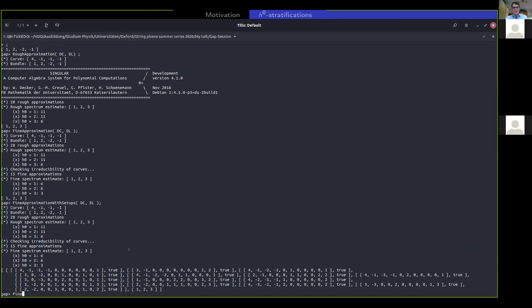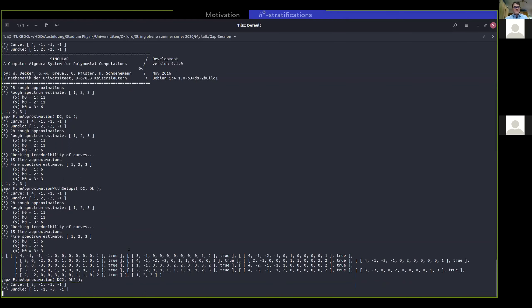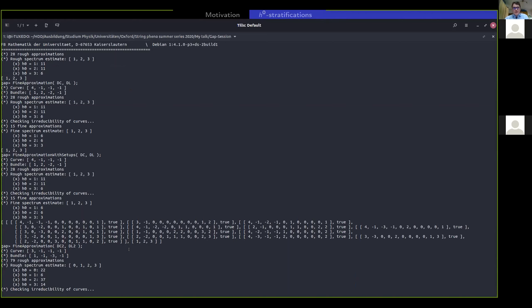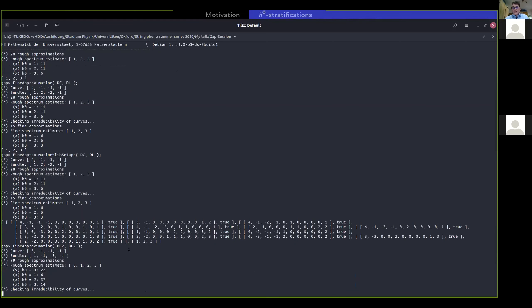Okay, let me show you maybe two more examples and then I'll wrap it up for you. So let me do another fine approximation of an example which I find very interesting, namely this one here, where the rough approximation tells you you can go H^0 from 0 to 3 and particularly have H^0 equals 1. However, by theory, you work out this stratification again, we actually know that H^0 equals 1 is not possible. And the fine approximation, as I see here, is able to tell us this as well. Namely, here you have after the rough approximation, still H^0 equals 1 in there, but here it's already gone.